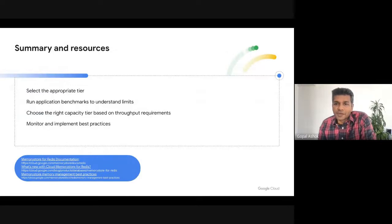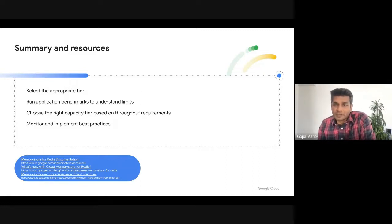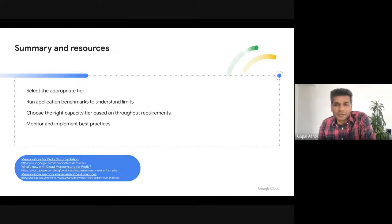In summary, to run Memorystore for Redis reliably: select the appropriate tier based on the application's availability needs; run benchmarks to understand the throughput requirements and the limits of the various capacity tiers; choose the right capacity tier based on throughput needs; and implement the best practices that we talked about. At the bottom you can find useful links for some of the topics we discussed. Hopefully this session gave you some insight on useful tips for how to run your Memorystore for Redis instance reliably. Thank you.